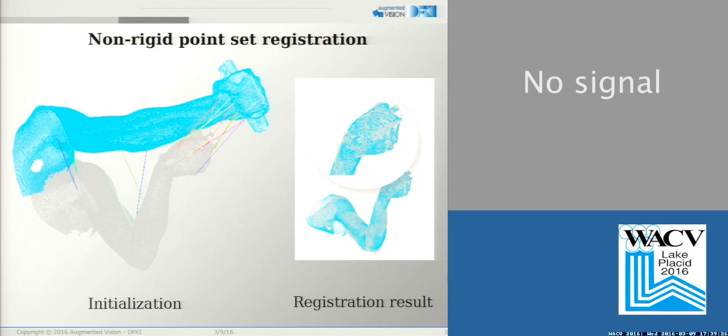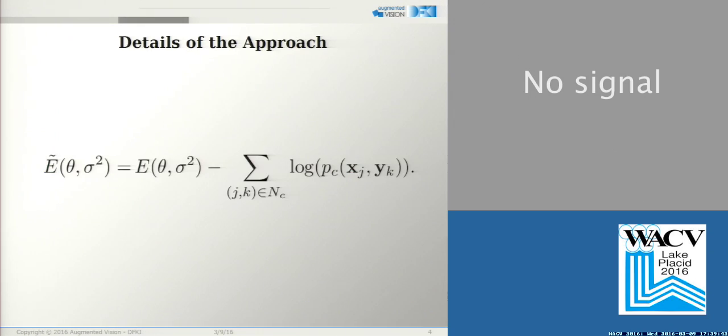We propose the first solution to the fundamental problem of embedding correspondence priors into a non-rigid point set registration algorithm in an efficient way for the case of the probabilistic class of approaches. Therefore, we extend the energy function of the coherent point drift algorithm with an additional term where the correspondences are given by the point indices. And we minimize the modified energy function with an expectation maximization.